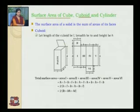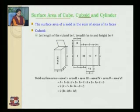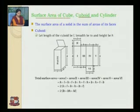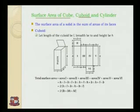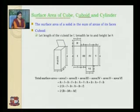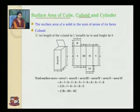Let's find the area of each rectangle. For the first rectangle, height is h and length is l, so area equals h into l. For the second rectangle, length is l and height is b, so area equals l into b. Similarly, we can find the area of the third, fourth, fifth, and sixth rectangles. The total is h into l, plus b into l, plus b into h, plus l into h, plus b into h, plus l into b.